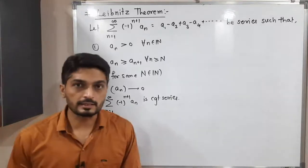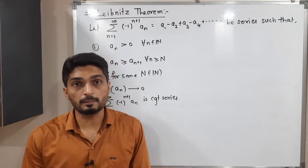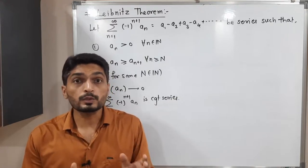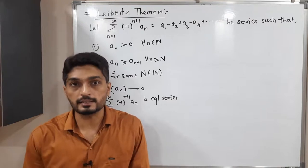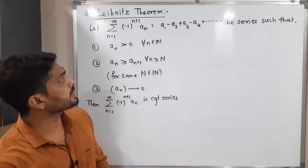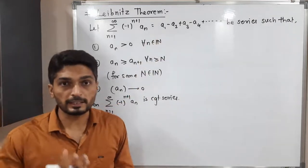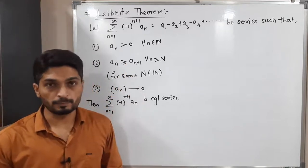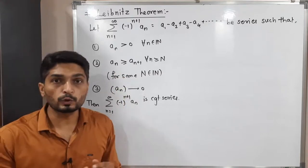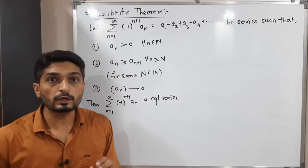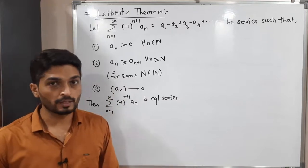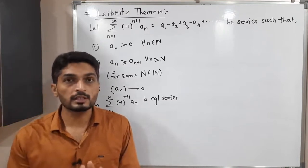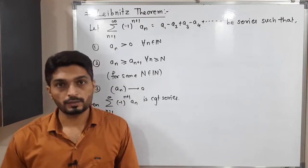Let us discuss Leibniz theorem. We are going to discuss the statement of the theorem and then its proof. It is a very important theorem. When we have to discuss convergence or divergence of any alternating series, we mostly use this theorem. The theorem says: if you have an alternating series a1 minus a2 plus a3 minus a4 and so on, with the conditions that all a_n are positive, a_n is a monotonic decreasing sequence, and a_n converges to zero, then the alternating series summation of (-1)^(n+1) * a_n is convergent.